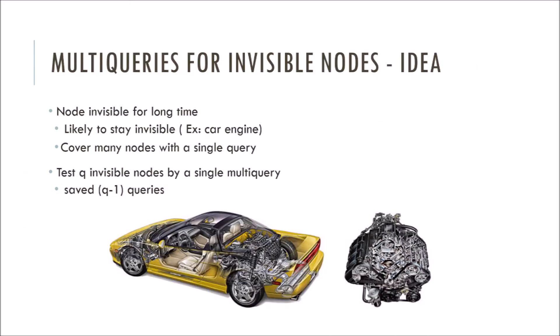The next building block is the concept of multi-queries. Before in CHC, we had to issue one occlusion query per previously invisible node. With CHC++ and multi-queries, we can cover more nodes with a single occlusion query. Imagine we had a scene with multiple cars, and each car also has an engine, but these are hidden from view because of the hood. These engines remain invisible for an extended amount of time, and are likely to continue to stay invisible for the foreseeable future. So we first test to see how many invisible nodes can we single query. In our case, this number would be correlated to the number of hidden car engines.